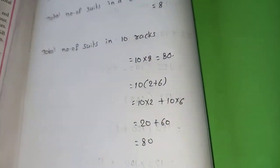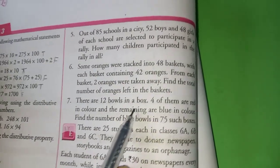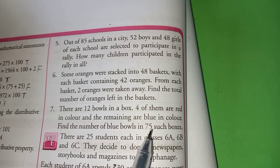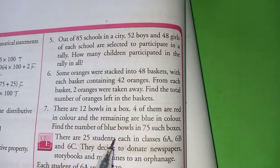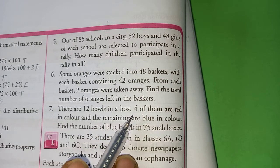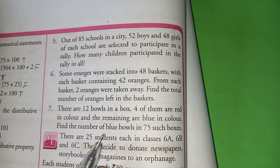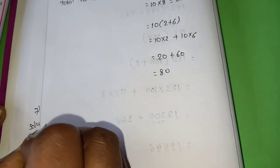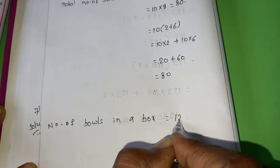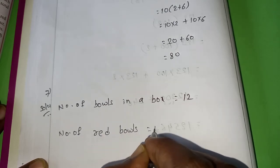Now, I will explain 7th question. There are 12 balls in a box. Out of them, 4 are red color. Remaining are blue. Find the number of blue balls. What they are asking? They are asking blue balls. Did they mention how many blue balls are there? No. They just mentioned there are 4 red balls. Remaining blues, they said. So we have to separate 12 minus 4 so that we can get the number of blue balls. Number of balls in a box equals to 12. Number of red balls equals to 4.